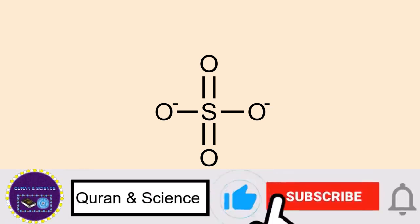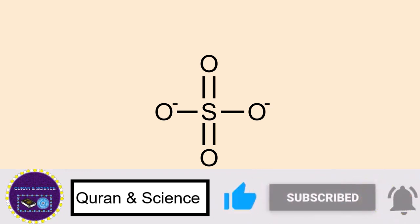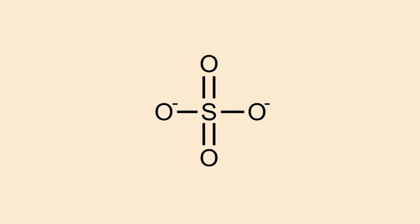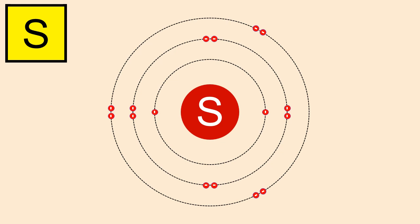To understand the bonding scheme of the sulfate, let's first see the quantity of electrons in the valence shells of sulfur and oxygen atoms. The atomic number of sulfur is 16, meaning it has 16 electrons: two in the first shell, eight in the second shell, and six in the third or valence shell. During bonding, sulfur tries to complete its octet and therefore requires two more electrons in its valence shell.